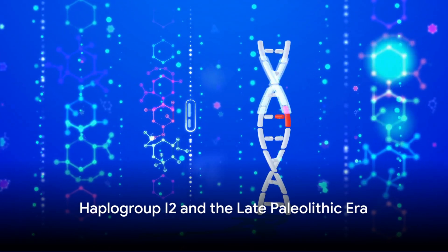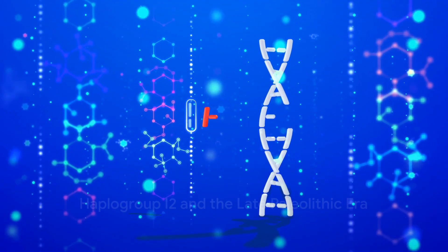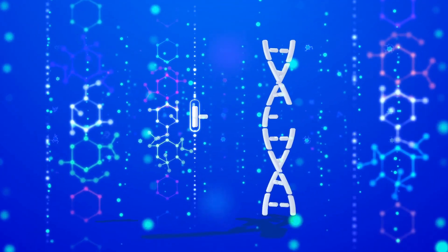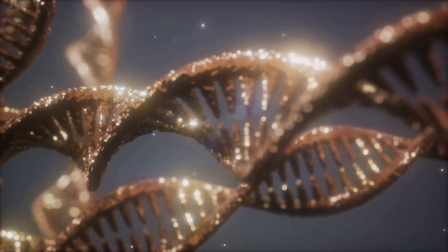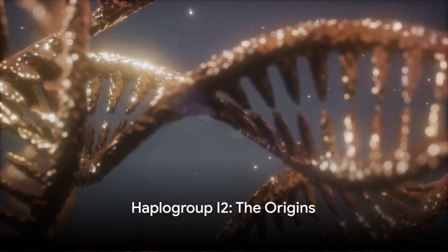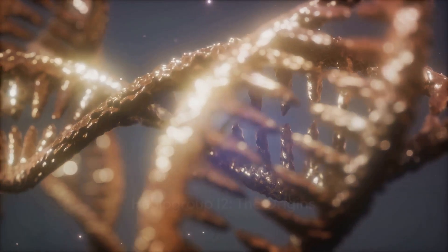As we move forward in time, we find ourselves in the late Paleolithic era, around the last glacial maximum, which lasted from approximately 26,500 to 19,000 years ago. It is during this period that haplogroup I2 is believed to have originated.